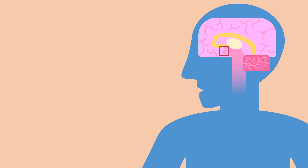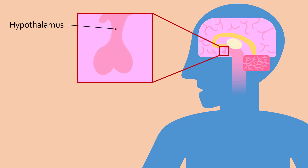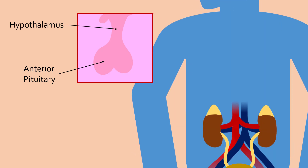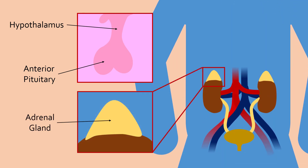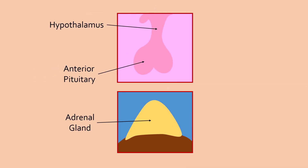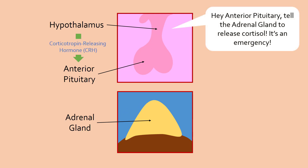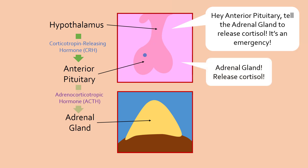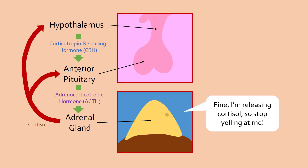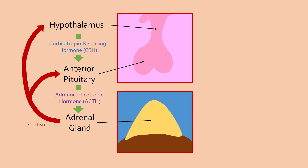The release of cortisol involves three organs: the hypothalamus and the anterior pituitary, both found within the brain, and the adrenal glands above the kidneys. These three areas constantly communicate through hormones. During times of stress, the hypothalamus releases corticotropin-releasing hormone, which tells the anterior pituitary to release adrenocorticotropic hormone (ACTH), which then tells the adrenal glands to release cortisol. When the hypothalamus and anterior pituitary detect cortisol, they stop releasing their respective hormones so the body does not produce too much cortisol.